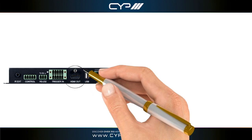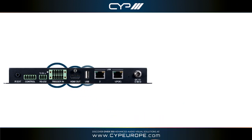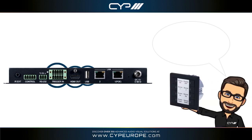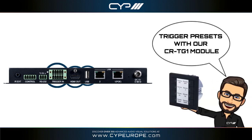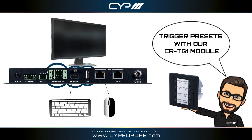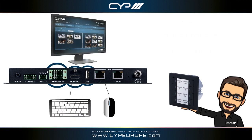The onboard HDMI output, trigger input and USB connectivity allows for simple control directly from the IP CS7. Pre-defined presets can be triggered via our CR-TG1 module, whilst the HDMI output and USB connection allow for direct use of the web GUI's drag and drop control system, with the simple connection of a USB mouse.